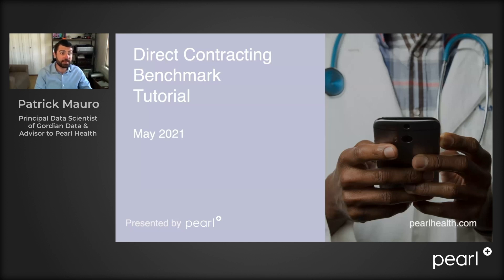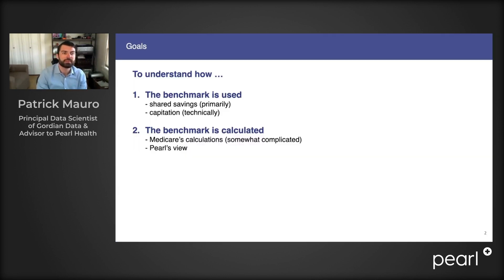I'll be talking to you today about how some of the financial calculations that underlie the direct contracting model are calculated, specifically the direct contracting benchmark. In this lecture, we're going to talk about how the benchmark is used. Primarily, it is used to calculate shared savings payments that you might receive in the model, but it will also creep into how the capitation payments are calculated, and we'll talk about what those terms mean as well, if you're not familiar.